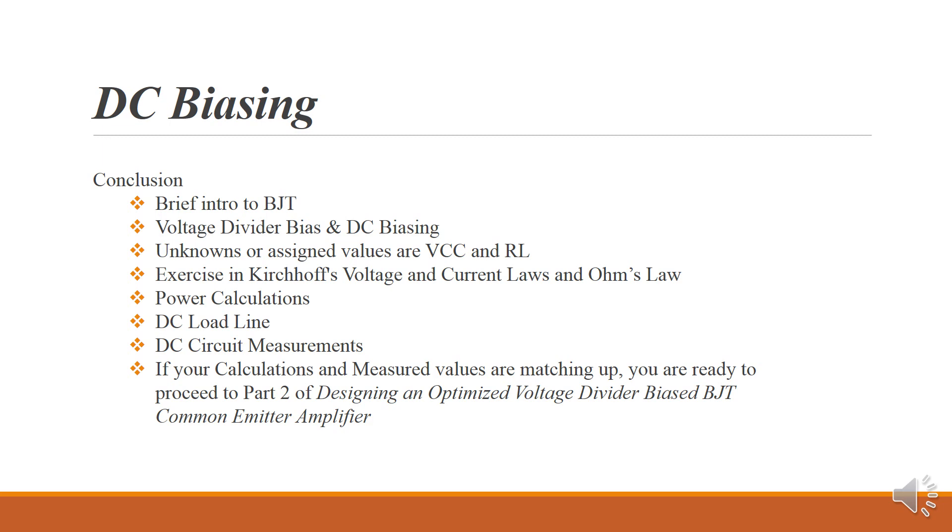We talked about DC load lines and what that, why they're important. They basically show you visually the three operating regions of a BJD transistor. So the three operating regions are saturation, cutoff, and active region. And we want to be, if we're building an amplifier, we want to be in that active region.